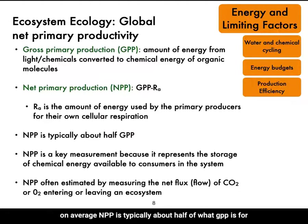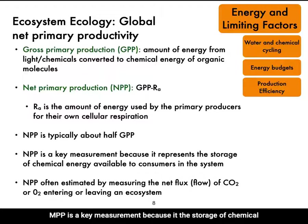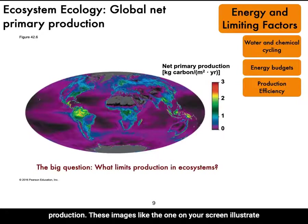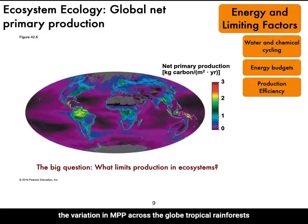On average, MPP is typically about half of what GPP is for a given ecosystem. MPP is a key measurement because it represents the storage of chemical energy available to consumers within the system. Satellites are powerful tools for studying global patterns of primary production. These images illustrate the variation in MPP across the globe.